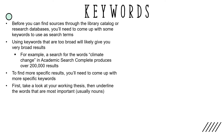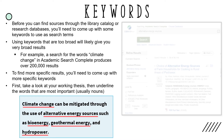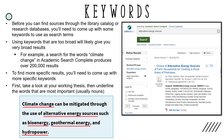First, take a look at your working thesis, then underline the words you feel are most important — usually these are nouns. Let's use this thesis as an example: 'Climate change can be mitigated through the use of alternative energy sources such as bioenergy, geothermal energy, and hydropower.' Here, you might underline the words 'climate change,' 'alternative energy sources,' 'bioenergy,' 'geothermal energy,' and 'hydropower.' Using a database like Academic Search Complete, try typing some of these terms in the search bar.